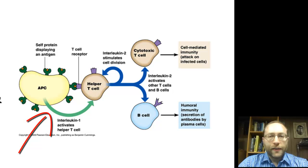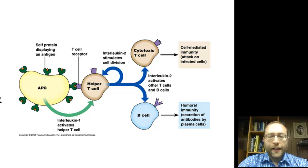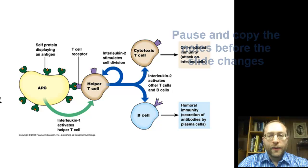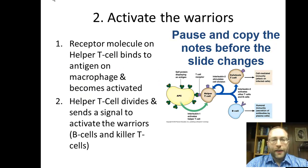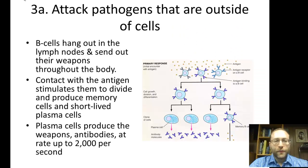The helper T cell will then start dividing, produce more helper T cells, produce memory cells, and also send out signals to activate the warriors of both armies — the killer T cells and the B cells. Those cells will then start dividing and also start attacking the pathogen.